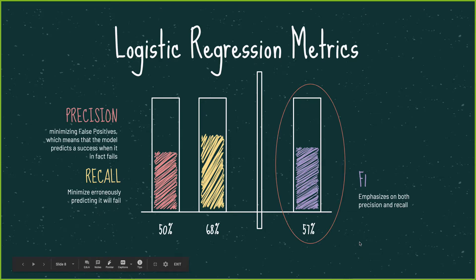Within my logistic regression model, I tested three different metrics: precision, recall, and F1. Precision minimizes false positives, which means that the model predicts a success when it, in fact, fails.